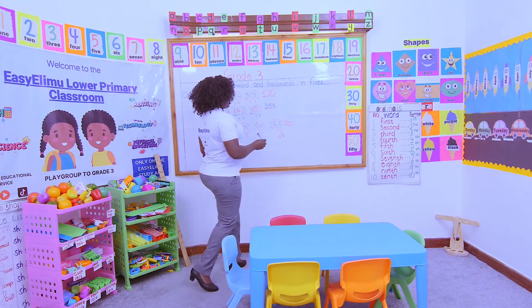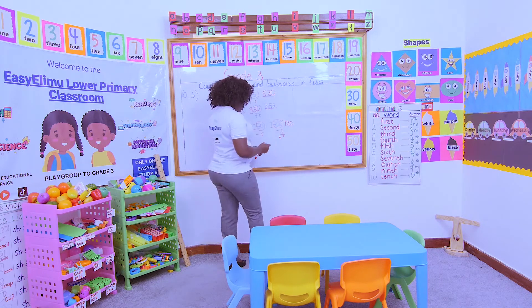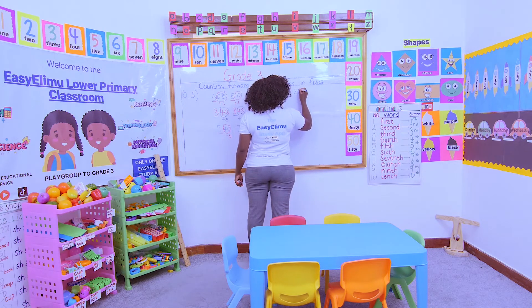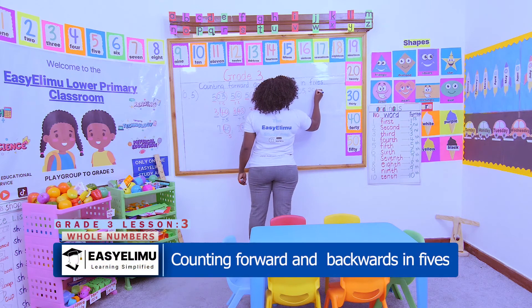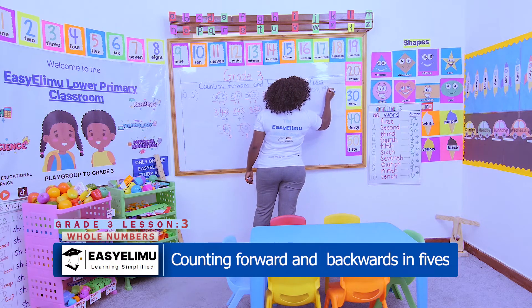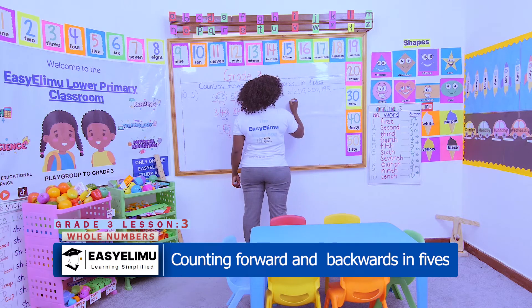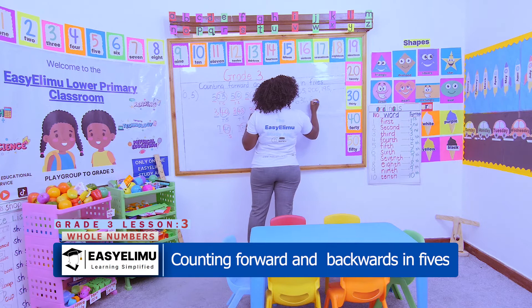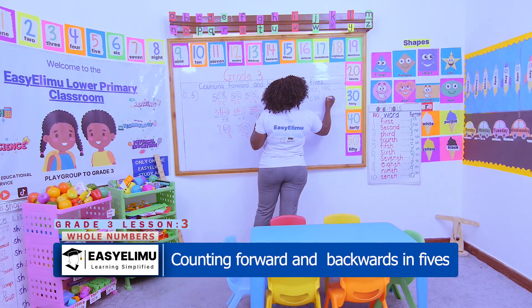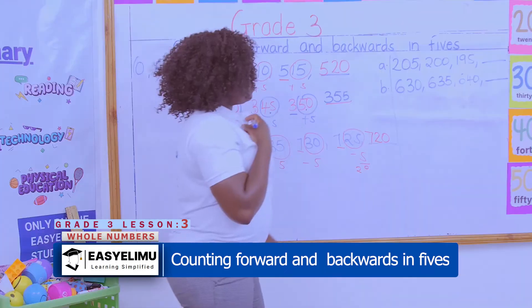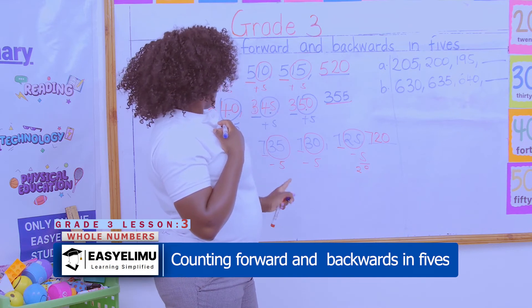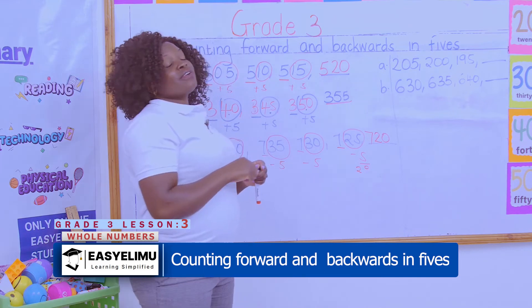Now I have two questions for you to do at home, of course with the help of your guardians. The first one: 205 ... 200 ... 195 — fill in the missing number. The second one: 630 ... 635 ... 640 — fill in the missing number. Remember the rules: counting forward we add, counting backward we reduce. Any question up to there?